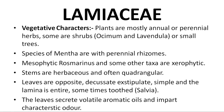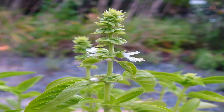Decussate means the next pair of leaves is arranged at exactly 90 degrees to the previous pair. Exstipulate means stipules are absent. Leaves are simple and the lamina is entire, sometimes toothed — toothed leaves are seen in Salvia. The leaves secrete volatile aromatic oils and impart a characteristic odour. This twig of Ocimum species shows the quadrangular stem and opposite decussate leaves.